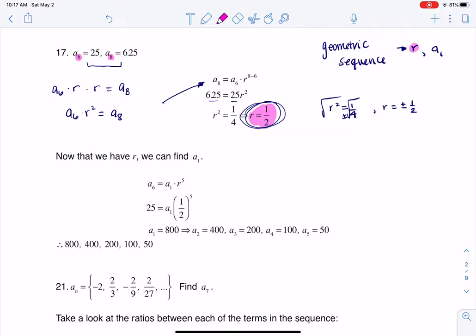I'm going to use that formula that says a sub n is equal to a sub 1 times r to the n minus 1. For my n value here, I could plug in 6 or 8, because I know a sub 6 and I know a sub 8. For me, I always just opt to pick the one with the smaller numbers, just personal preference.